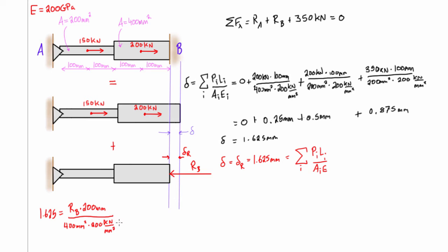Drawing the free body diagram for the second section, the only internal force is still RB. The length of this section is 200 millimeters and the cross-sectional area changes to 200 millimeters squared, with the modulus of elasticity the same throughout at 200 gigapascals or kilonewtons per millimeter squared. We can then start simplifying: canceling millimeters and millimeters squared, leaving just kilonewtons.